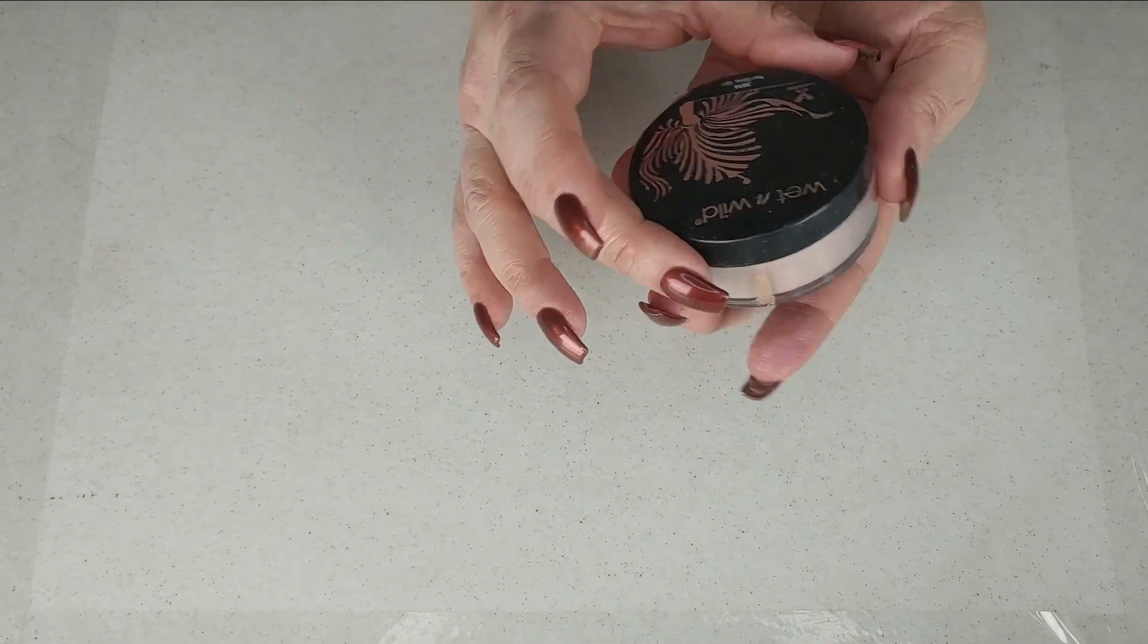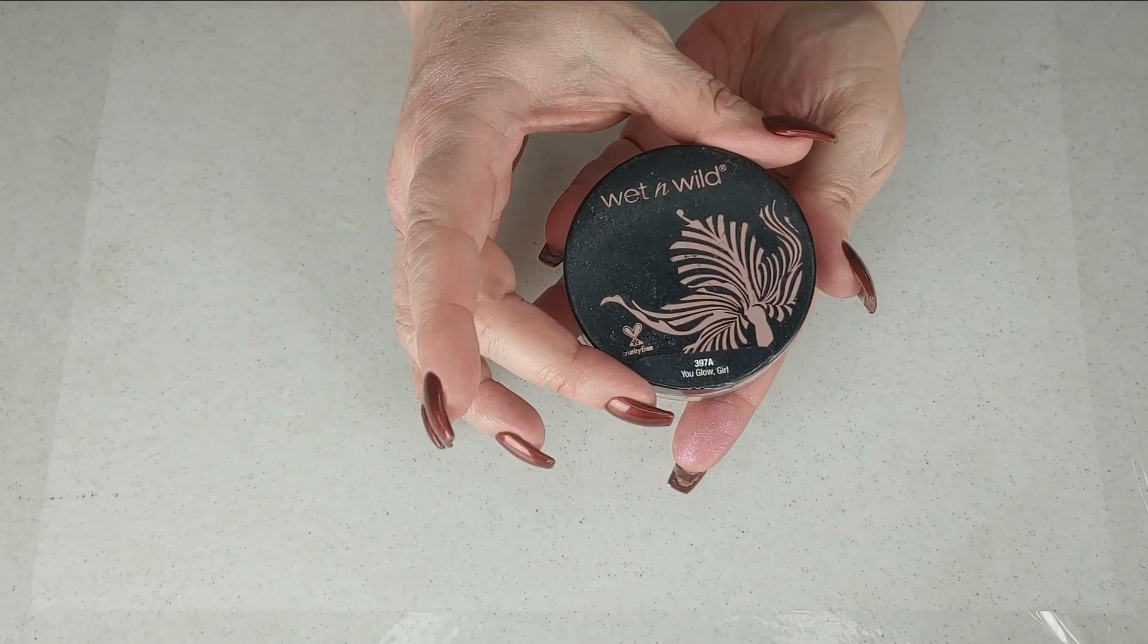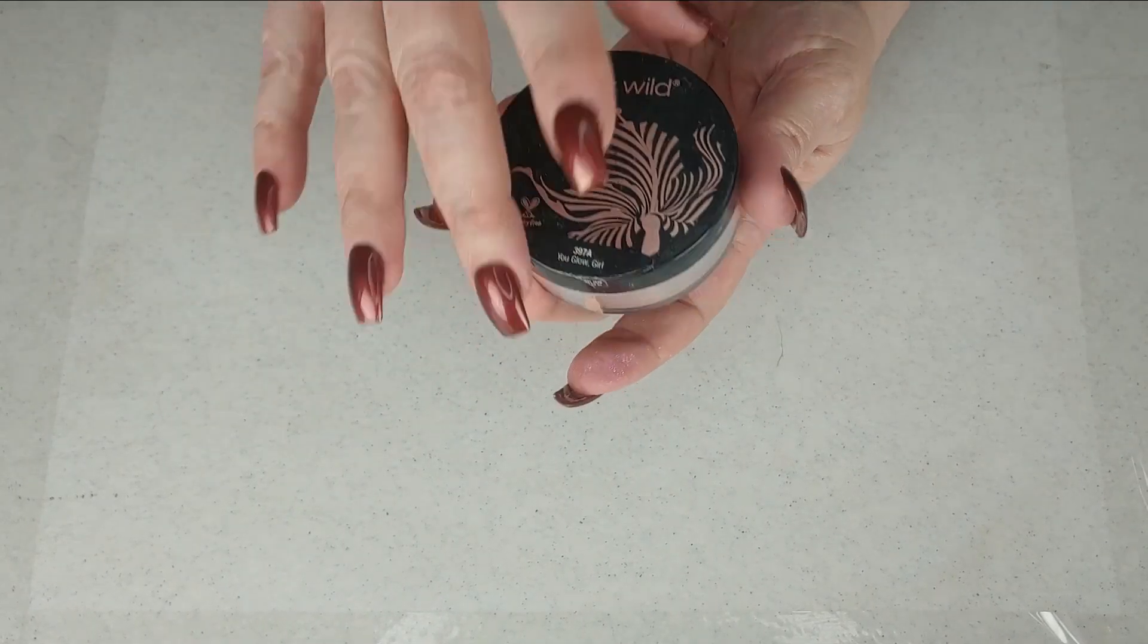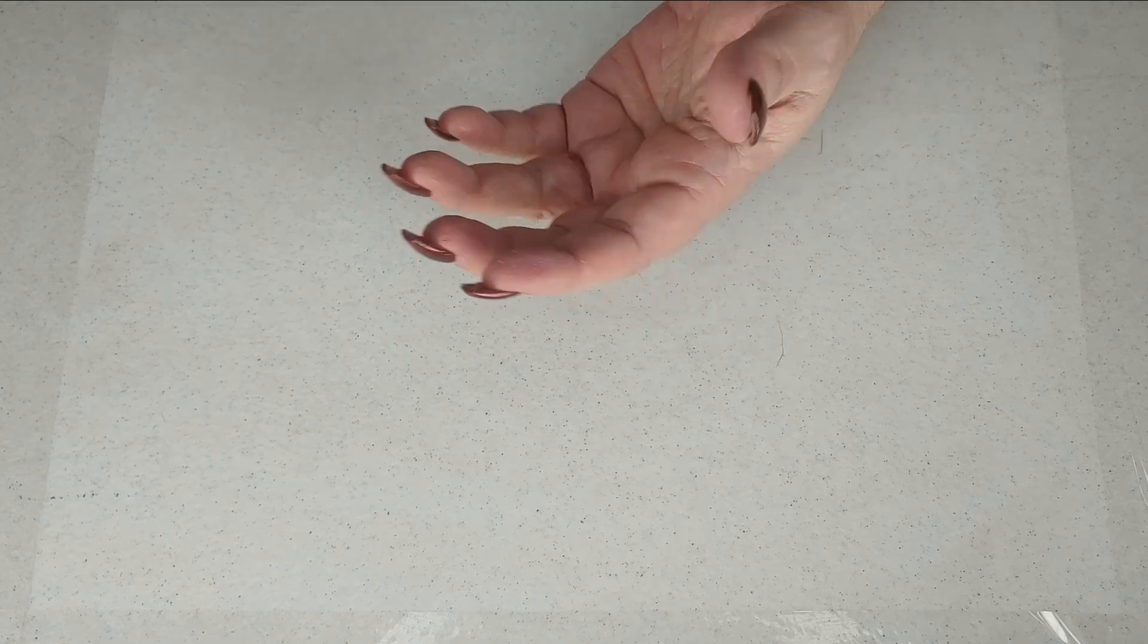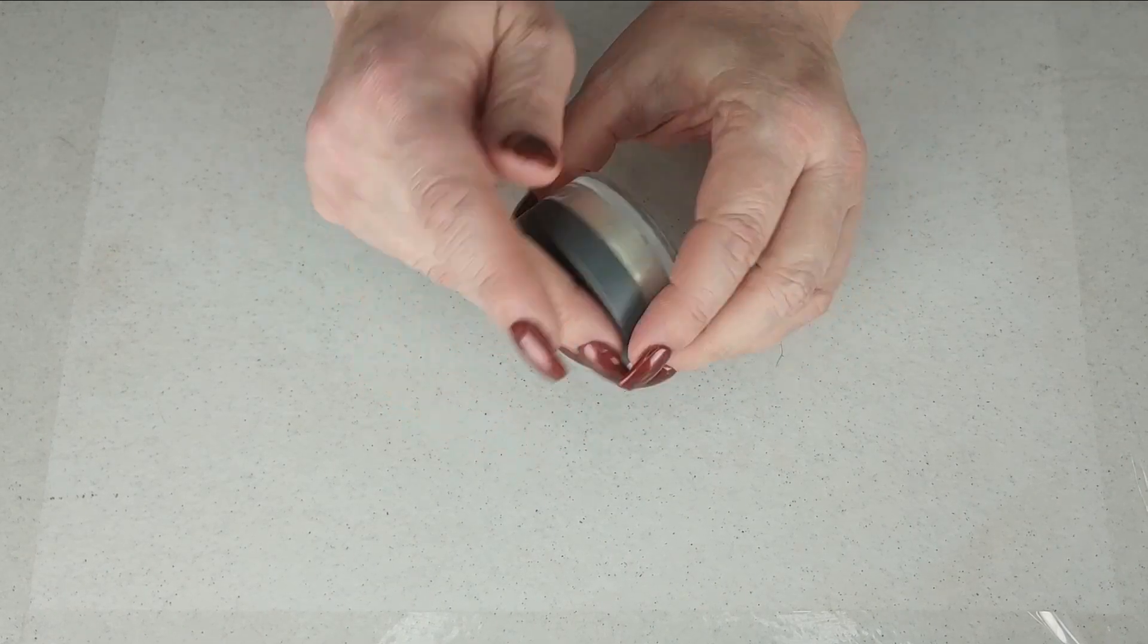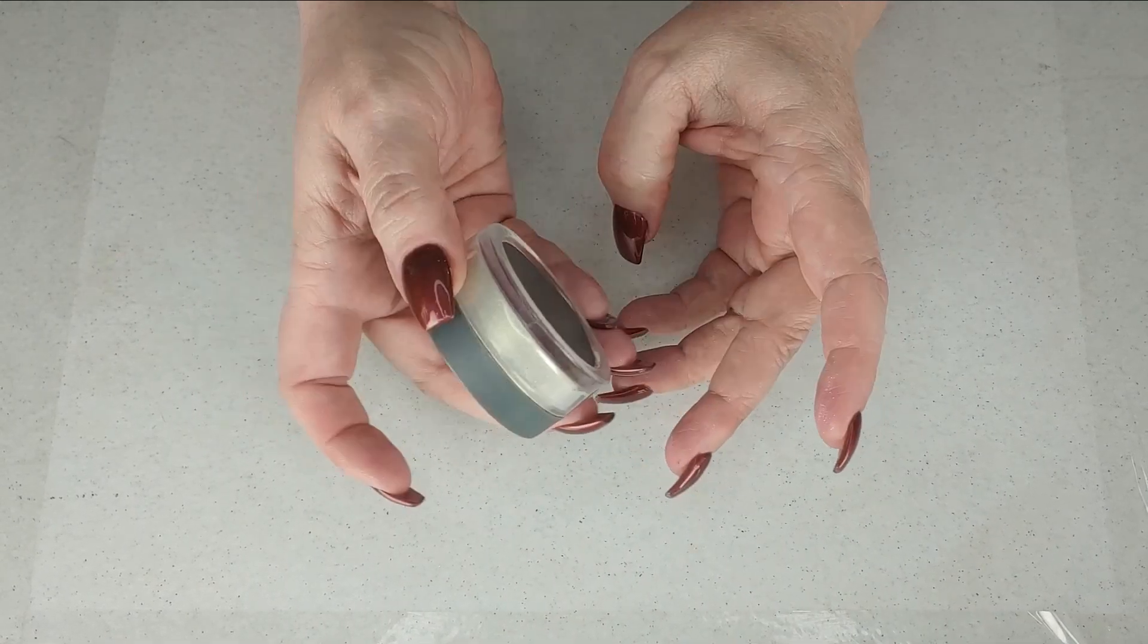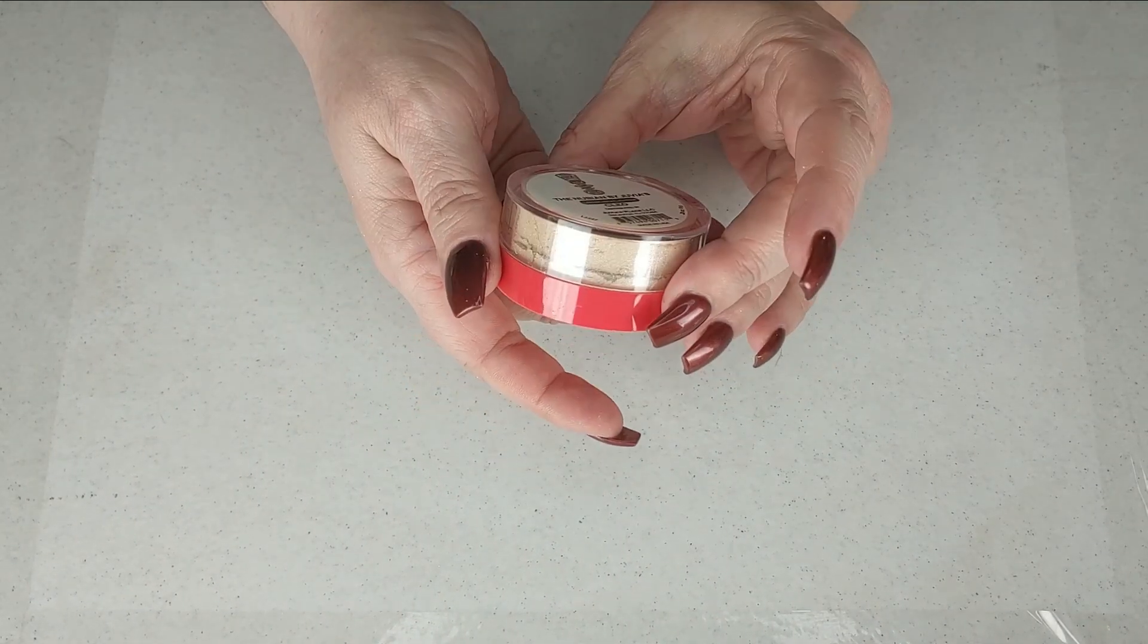Okay now let's do some loose highlighters. This is the Wet and Wild You Glow Girl and this is a pink toned and I love it, I absolutely love this. I think this is the one I've had the longest. And we have the KAB Cosmetics, K-A-B Cosmetics, and this is the Illuminating Dust in Beam. I did get this in friend mail from Laura the Bargain Hunter and I love it, it's a beautiful goldy champagne shade.